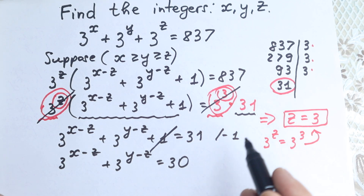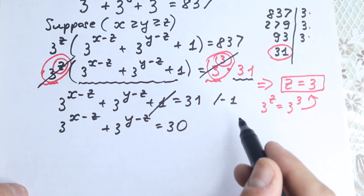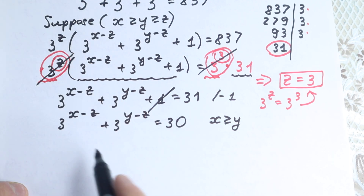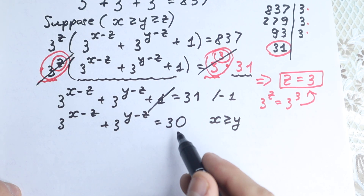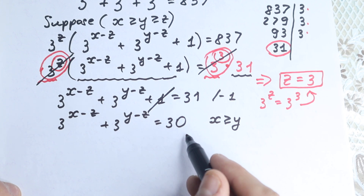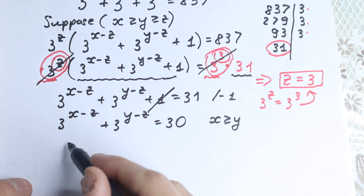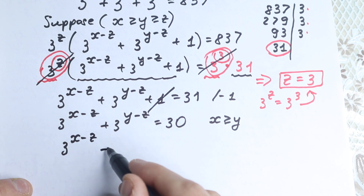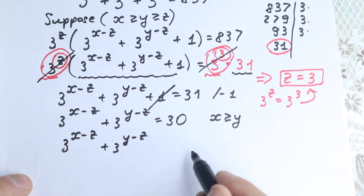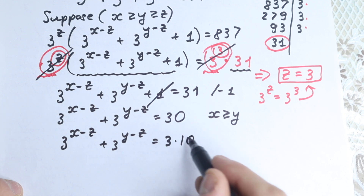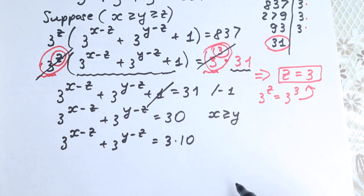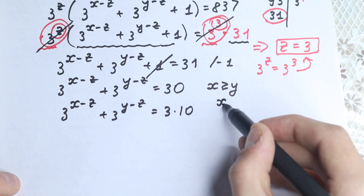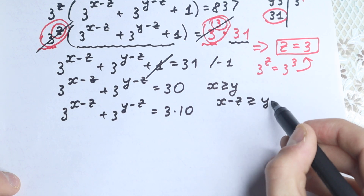We need to find x and y, since we know z equals 3. Since x is greater than or equal to y, then x minus z is greater than or equal to y minus z. We can express 30 as 3 times 10. So we have 3 to the power x minus z plus 3 to the power y minus z equal to 3 times 10.